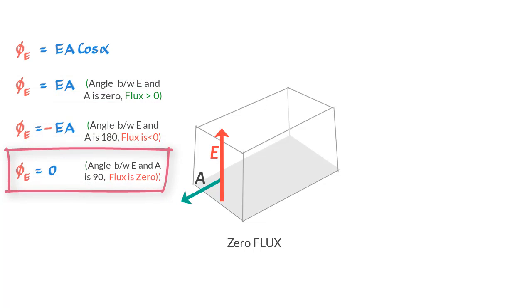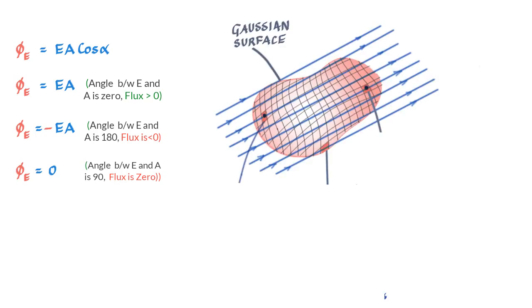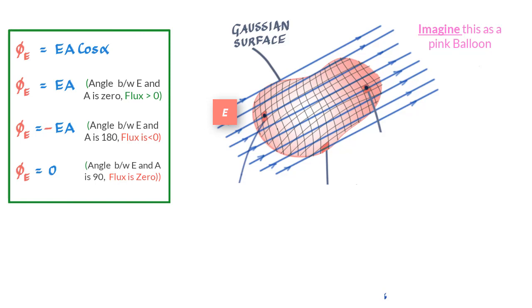Well, it's all fine for regular surfaces like this, but is it true for irregular surfaces as well? The answer is that even if we take an irregular Gaussian surface like this, and yes going forward we'll refer to such surfaces as Gaussian surfaces, the above statement would still hold true.